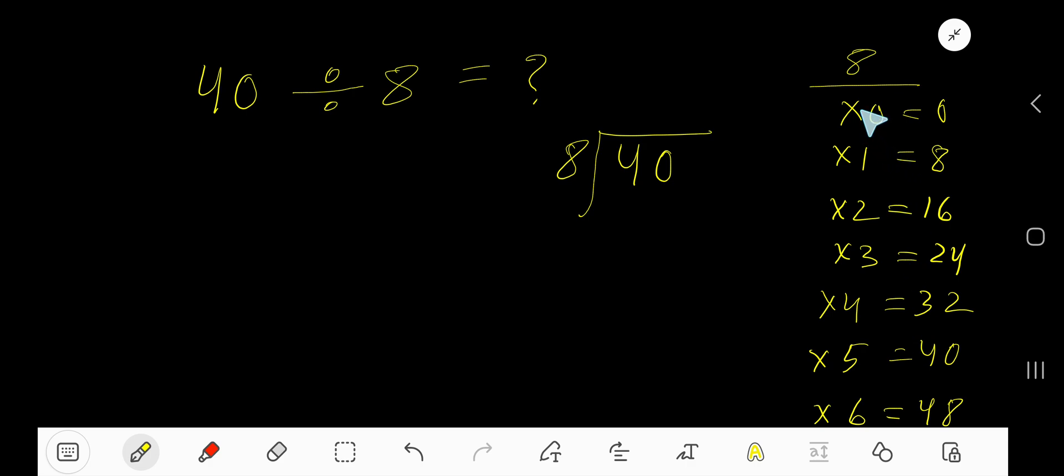To find the multiplication table of 8, just add 8 with the previous step. 0 plus 8 is 8, 8 plus 8 is 16, 16 plus 8 is 24, 24 plus 8 is 32, 32 plus 8 is 40. So 8 goes into this.